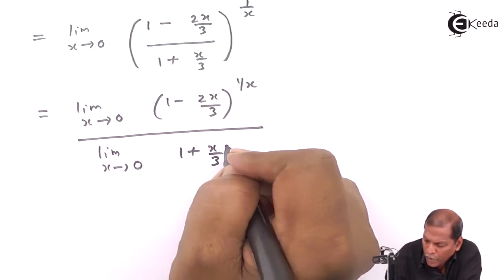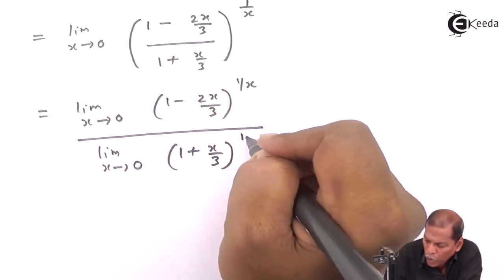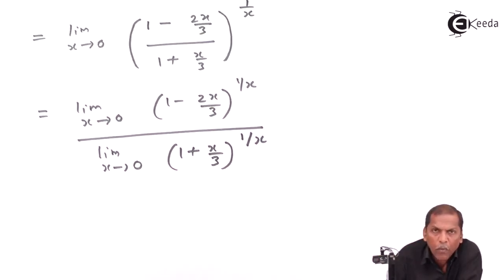upon limit x tends to 0, (1 plus x upon 3) whole bracket raised to 1 by x.